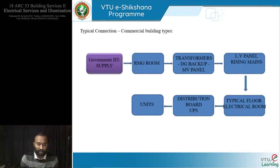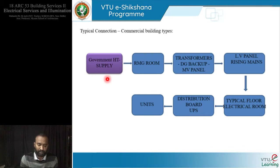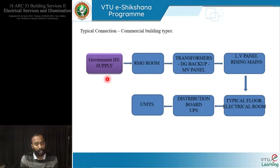If we move to see what happens in a commercial building, the government supply, instead of LT, is going to be HT. The government, according to the type of industry or commercial building and the power consumption of equipment, gives those consumers HT supply depending upon their need. Then we have the ring main gear room — basically where our metering panels are also going to be located. From there it goes to various transformers, because some appliances need high voltages and some need low voltages.